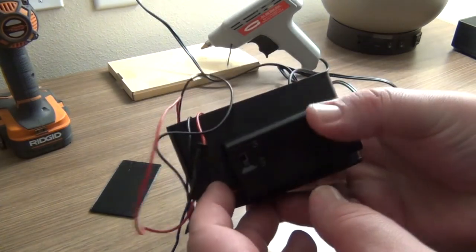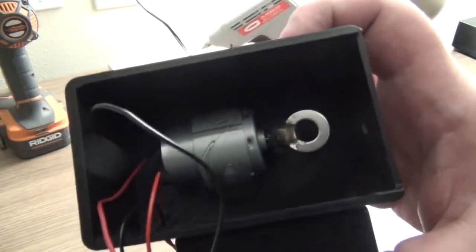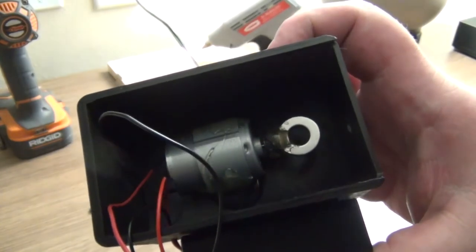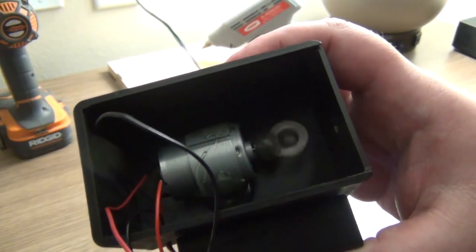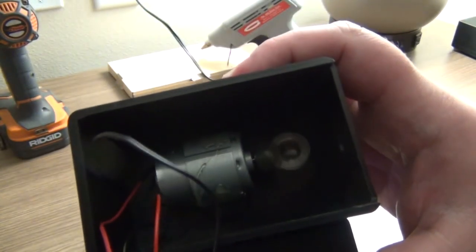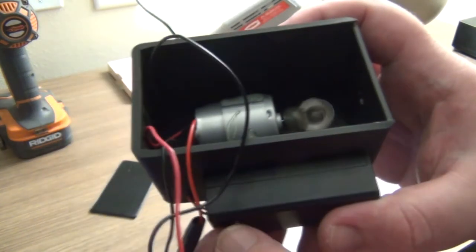Alright, our glue is dry. See our motor in there, solid. We're going to turn it on one more time to make sure it doesn't flop around. Looks like we're good. You see the magnet spinning there.